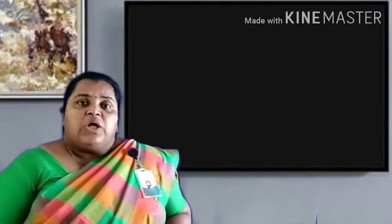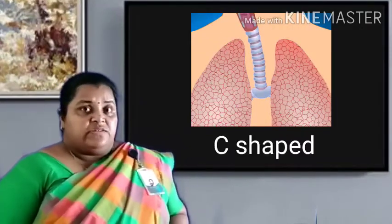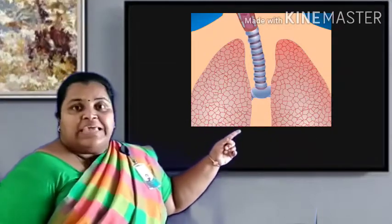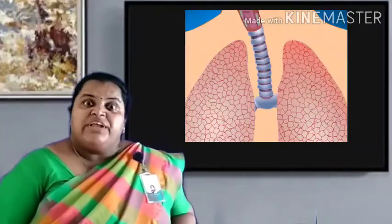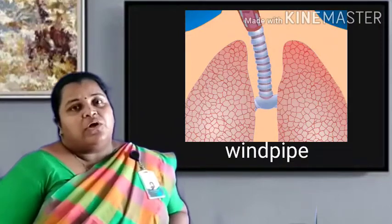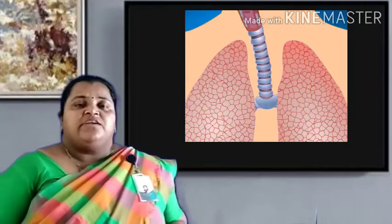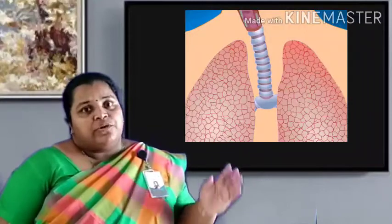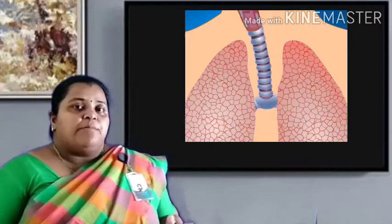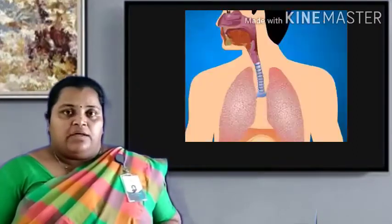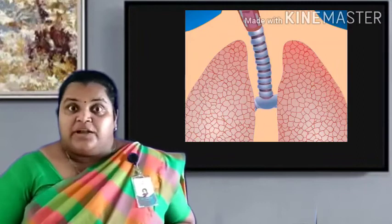Just below the larynx is a long tube made up of C-shaped cartilaginous rings, known as the trachea. In lower classes you have learnt another name for it — it is called the windpipe. The cartilaginous rings present on the trachea help it to remain open always. Mucus glands present throughout the wall of the trachea secrete mucus which prevents the entry of dust particles and germs.